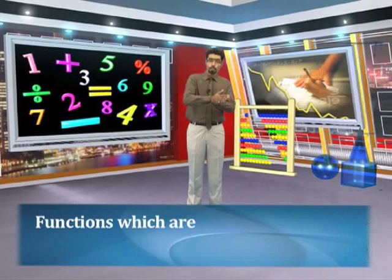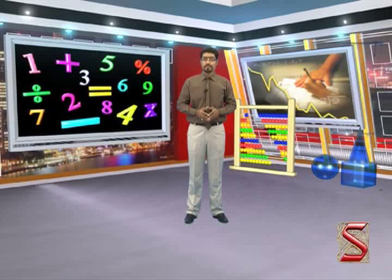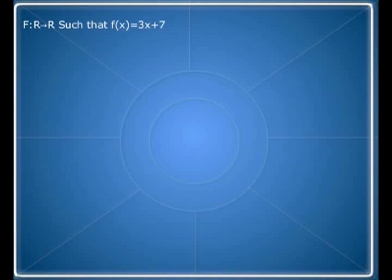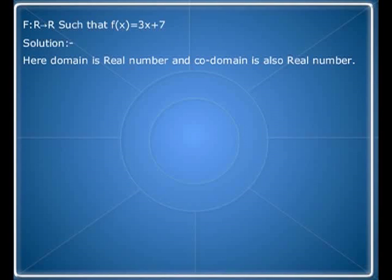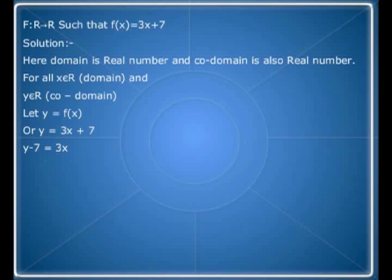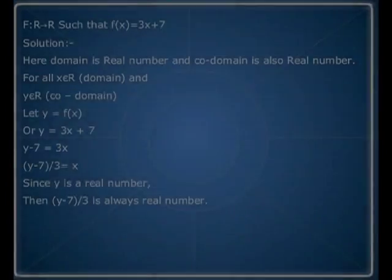Functions which are not onto are known as into functions. Let us find whether f is onto or not, where f is a function from R to R such that f of x is equal to 3x plus 7. The domain is real numbers and the co-domain is also real numbers. Let y equal f of x, so y equals 3x plus 7. Then x equals (y minus 7) divided by 3. Since y is a real number, (y minus 7) divided by 3 is always a real number.